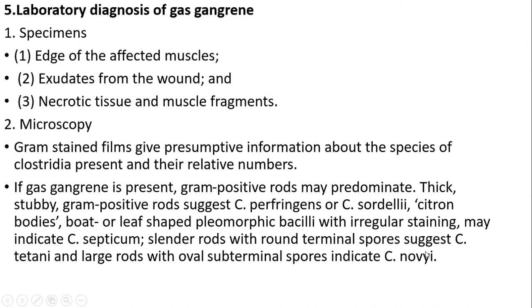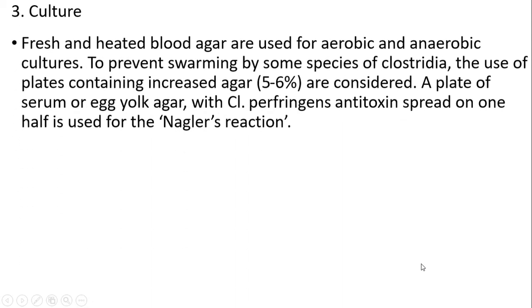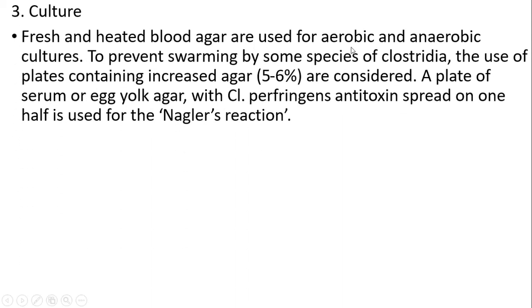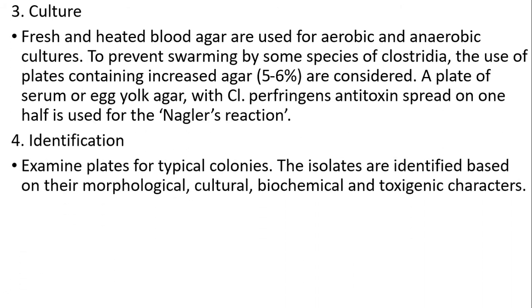Slender rods with round terminal spores indicate Clostridium tetani, and large rods with oval subterminal spores indicate Clostridium novyi. For culture, fresh and heated blood agar is used for aerobic and anaerobic cultures to prevent swarming. Plates containing increased agar to 5–6% are recommended. A plate of serum or egg yolk agar with Clostridium perfringens antitoxin spread on one half is used for Nagler reactions. For identification, examine plates for typical colonies; isolates are identified based on their morphological, cultural, biochemical, and toxicogenic characteristics.